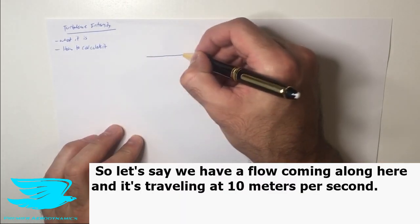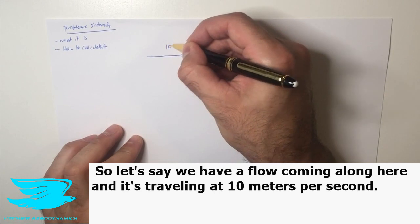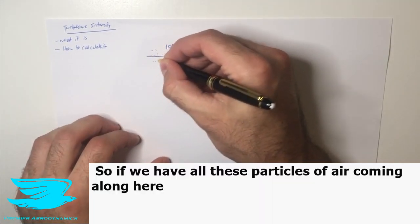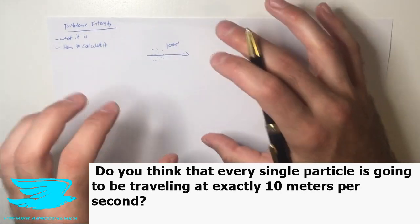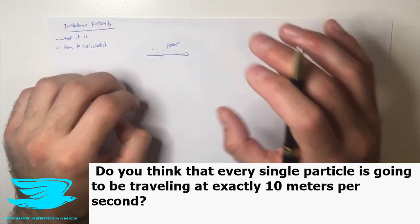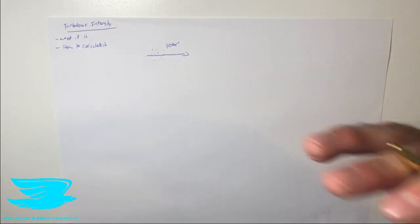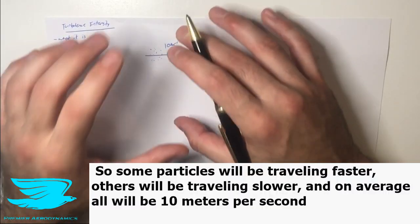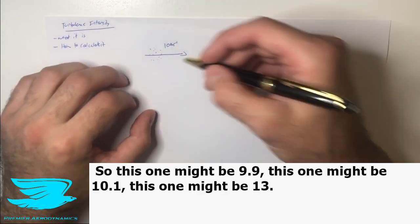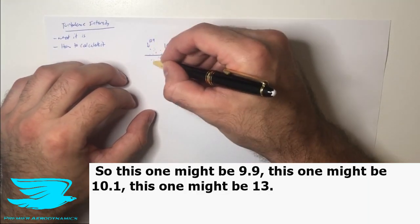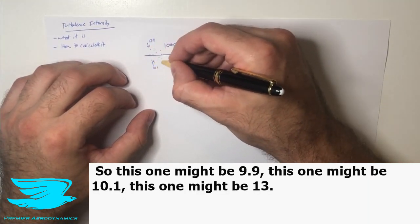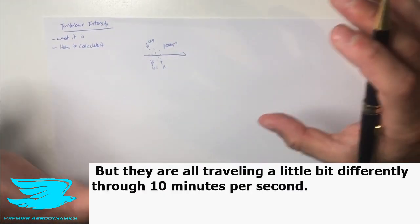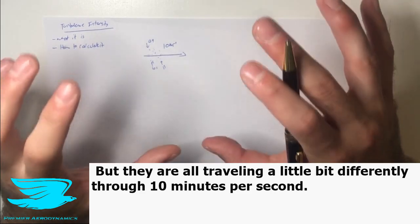So let's say we have a flow coming along here and it's traveling at 10 meters per second. If we have all these particles of air coming along here, do you think that every single particle is going to be traveling at exactly 10 meters per second? Well, the answer is no. So some particles will be traveling faster, others will be traveling slower, and on average they'll all be 10 meters per second. So this one might be 9.9, this one might be 10.1, this one might be 13, so that's quite an outlier.